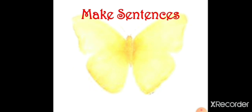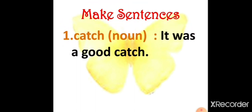Moving on, we have make sentences. The first one is 'catch' as a noun. As a noun, when we use a word as a noun, we're talking about the thing itself, not the action. So 'it was a good catch' - the catch itself was very good. Another example: Virat's catch saved the match.